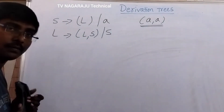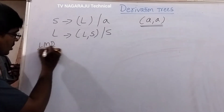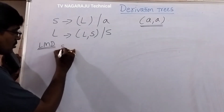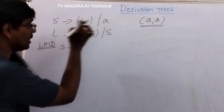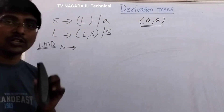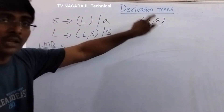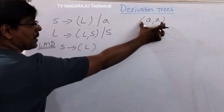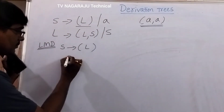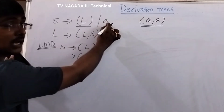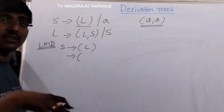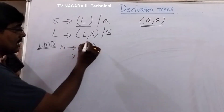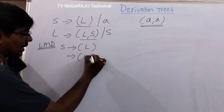First, to construct the leftmost derivation, the derivation always starts from the starting symbol. From S we have two productions — which production to consider depends on the string. Since the string contains brackets, we use S → (L). Now, L is replaced: if we replace with a simple terminal, derivation stops there. But we require two a's separated with a comma, so L is replaced with L,S — giving us (L,S). Here L and S are two non-terminals. In leftmost derivation, we first replace the leftmost non-terminal L.